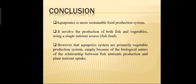In conclusion, aquaponics is a sustainable food production system. It involves the production of both fish and vegetables using nutrient sources. Aquaponics systems are primarily vegetable production systems, simply because of the biological nature of the relationship between fish nutrient production and plant nutrient uptake.